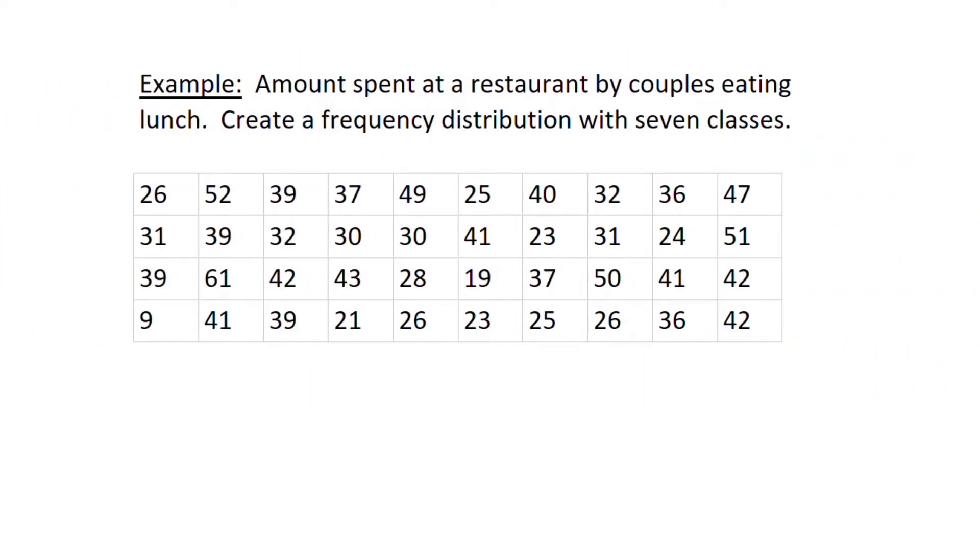So now we're going to create our own frequency distribution. In this example, we have 40 data points showing the amount spent at a restaurant by couples eating lunch together. And the instructions are create a frequency distribution with seven classes. So we're going to have to use that value of seven. And as I scan through the data, I see the highest or the maximum largest amount is 61. And the smallest amount is nine.